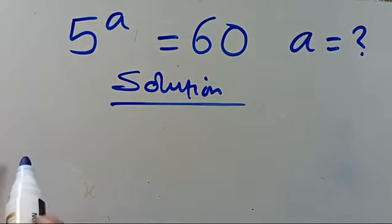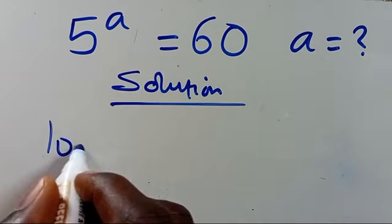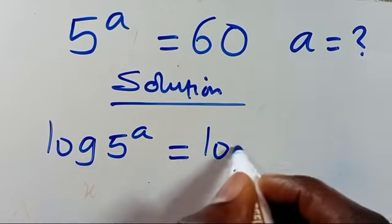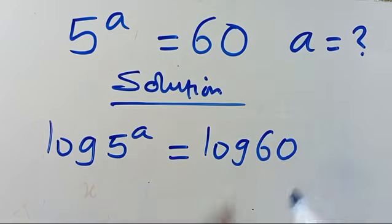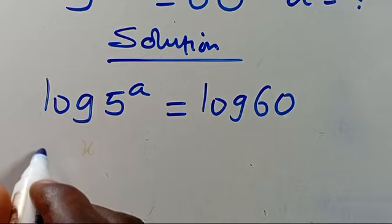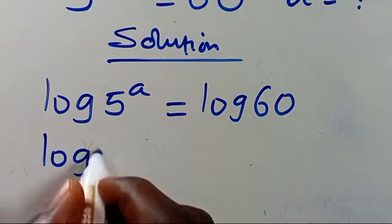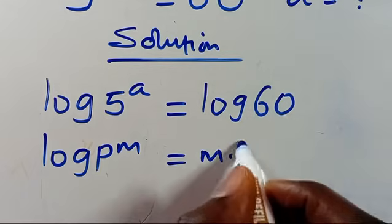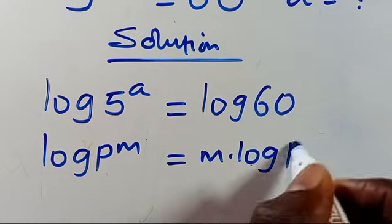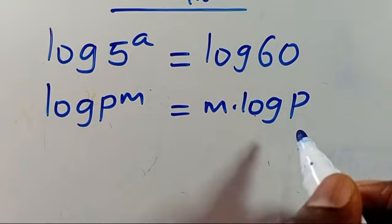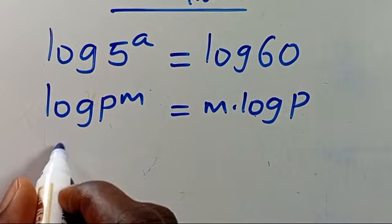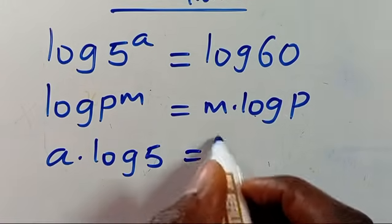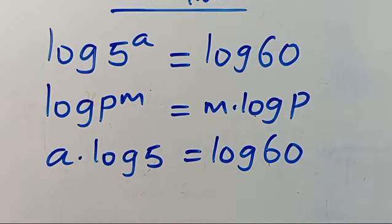Let's take the log of both sides. So we are going to have log of 5 to the power of A equals log 60. Recall that when we have log P to the power of M, this power M comes down to give M multiplied by log P. So from here we have A multiplied by log 5 equals log 60.